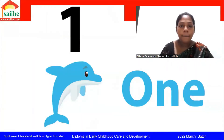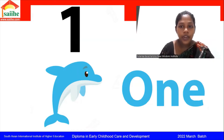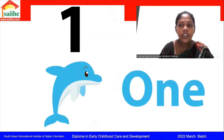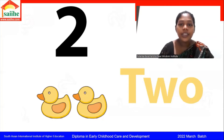Now you can see number 1 on the screen. There is 1 dolphin. Everybody say 1! Number 1. Next number, I will show you 2. Everybody say 2! I have put here 2 little ducks. 2 ducks. Number 2. Everybody say louder with me, my dear kids.